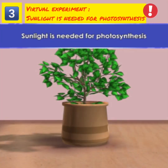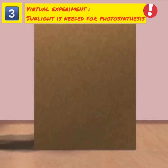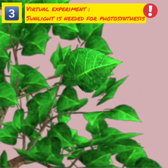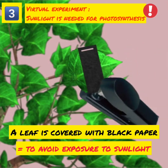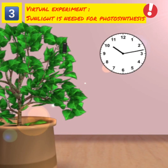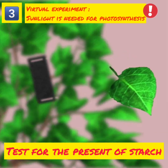Sunlight is needed for photosynthesis. This experiment shows that sunlight is needed for photosynthesis. A potted plant is covered with a box for two days to remove the starch in the leaves. Part of a leaf is covered with black paper to avoid exposure to sunlight. The green plant is then exposed to sunlight for two hours. Then, the leaf is tested for the presence of starch.